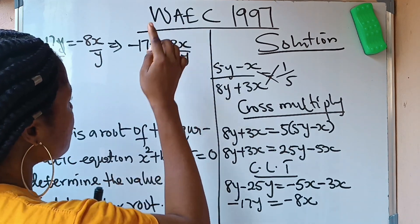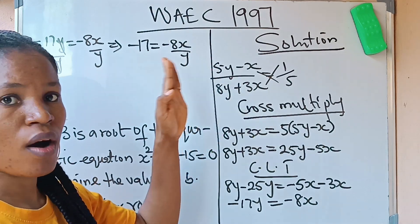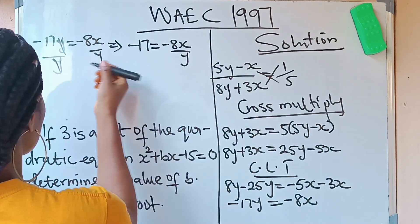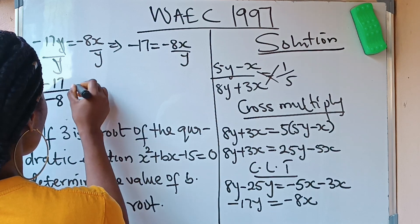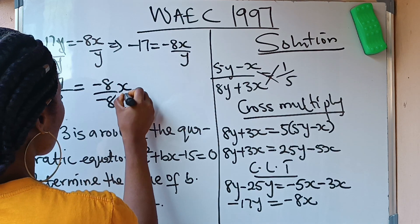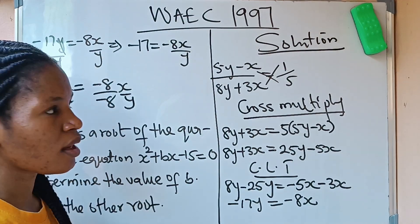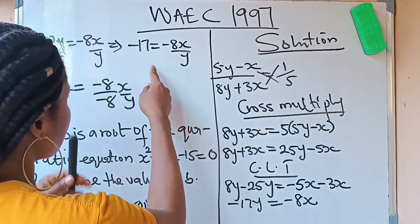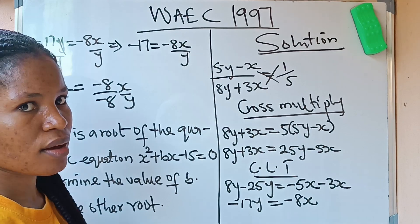So how do we do that? We are going to say -17/-8 = (-8/-8)(x/y). Because this -17 has -8 on its own times x/y. I don't know if you are getting it, or you can multiply this by 1/-8, however you want to do it.